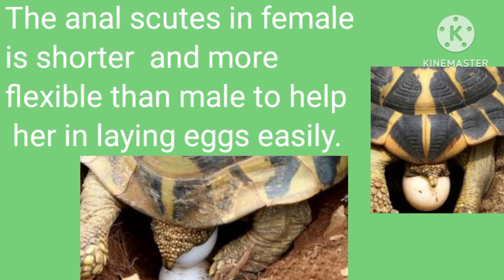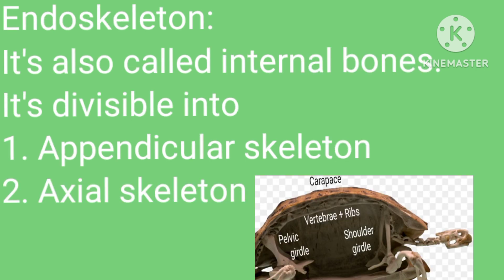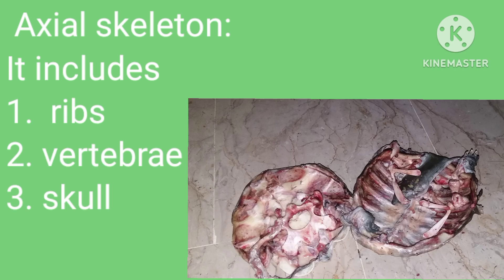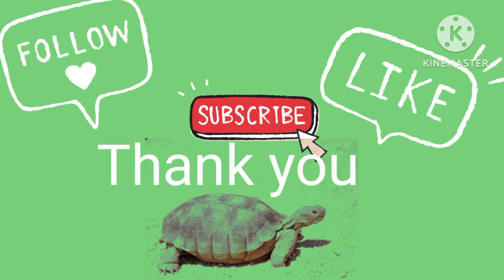In females, the plastron is flattened because she does not need to fit her mating partner beneath her. The anal scutes in females are shorter and more flexible than in males, to help her lay eggs easily. Endoskeleton: also called internal bones, it is divisible into appendicular skeleton and axial skeleton. The appendicular skeleton includes limb bones and girdles. The axial skeleton includes ribs, vertebrae, and skull.